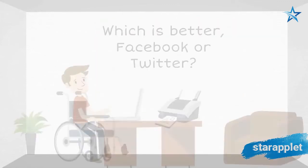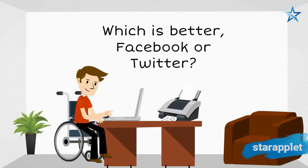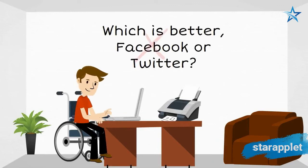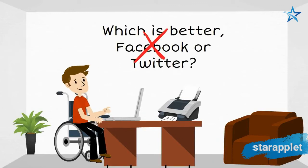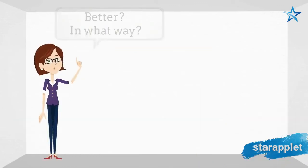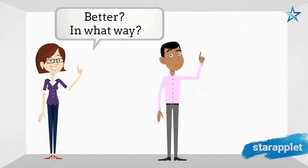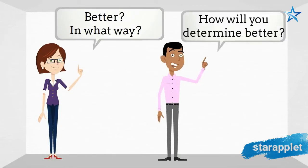For example, a question such as "Which is better, Facebook or Twitter?" is vague. It is not really clear what you mean by better, or on what criteria you will judge the two platforms.